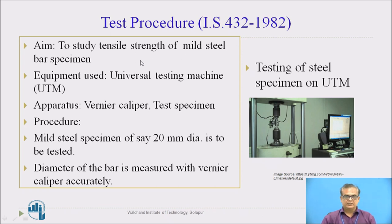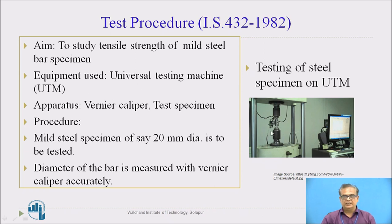This particular test procedure is according to IS 432-1982. The aim of today's experiment is to study tensile strength of a mild steel bar specimen. Equipment used: universal testing machine. You can see here — this is the machine which is used for this particular test. Apparatus used: vernier caliper, test specimens, etc.